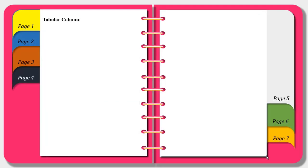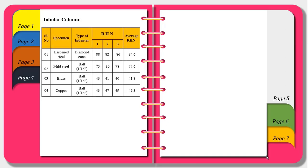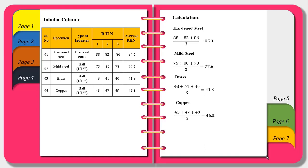Next, the readings obtained from the experimentation has been formulated in tabular column and the various hardness numbers have been plotted as shown. The average Rockwell hardness number has been taken and the calculation has been explained. For hardened steel it is 85.3, for mild steel it is 77.6, and for brass it is 41.3, and for copper it is 46.3.